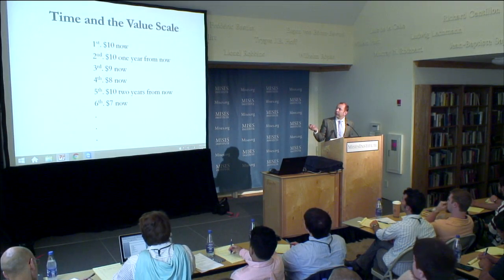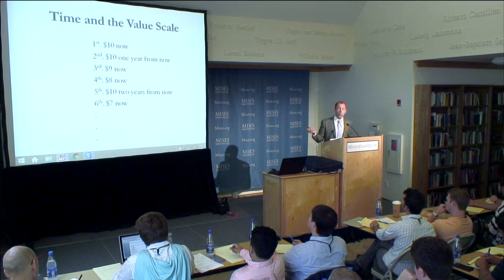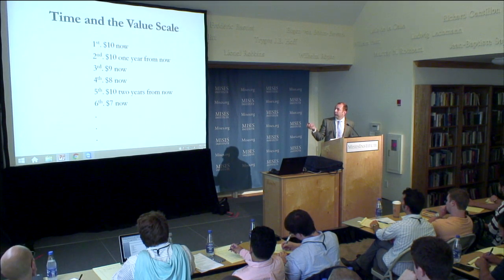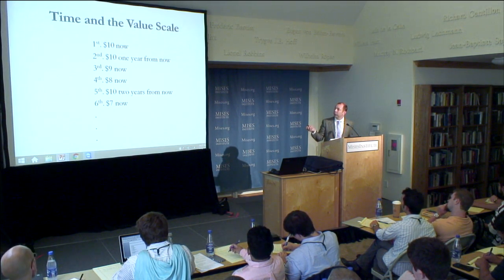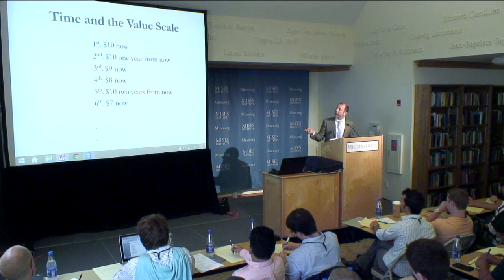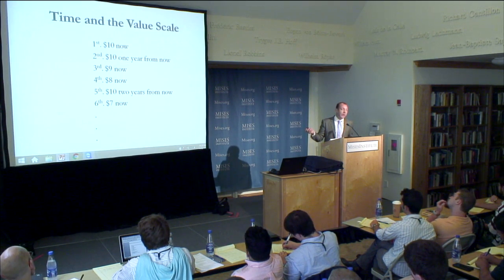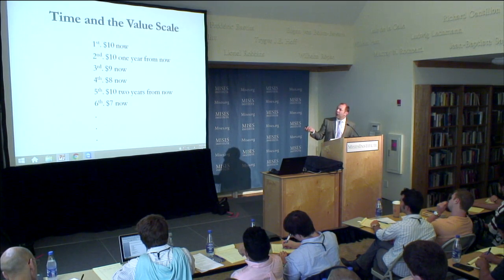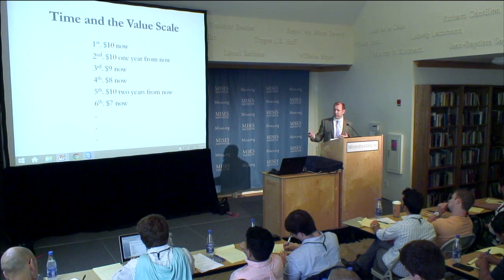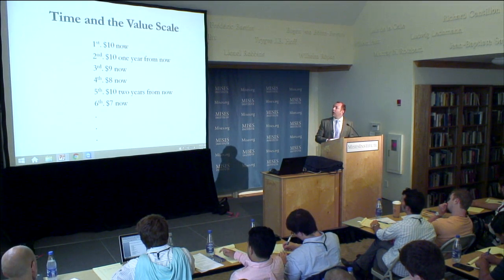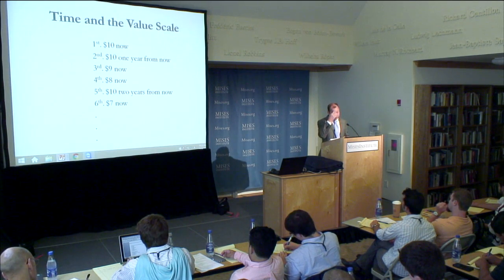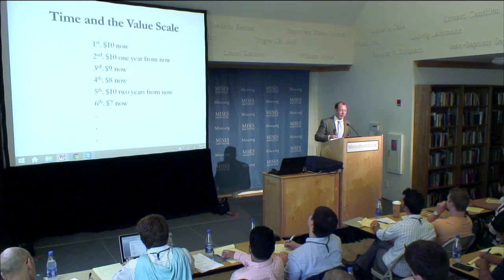I don't want to go into too much depth here because Professor Herbener will give a lecture on time preference, but we can also place different goods or want-satisfactions on our value scale across different temporal periods. For example, you could value having $10 in your pocket right now more than $10 in your pocket one year from now. Professor Herbener will explain why valuing $10 more now than in the future has to hold true. You can go down the value scale: $10 now, $10 in a year, $9 now, $8 now — but maybe $8 right now is preferable to having $10 two years from now. So we can start looking at intertemporal values.